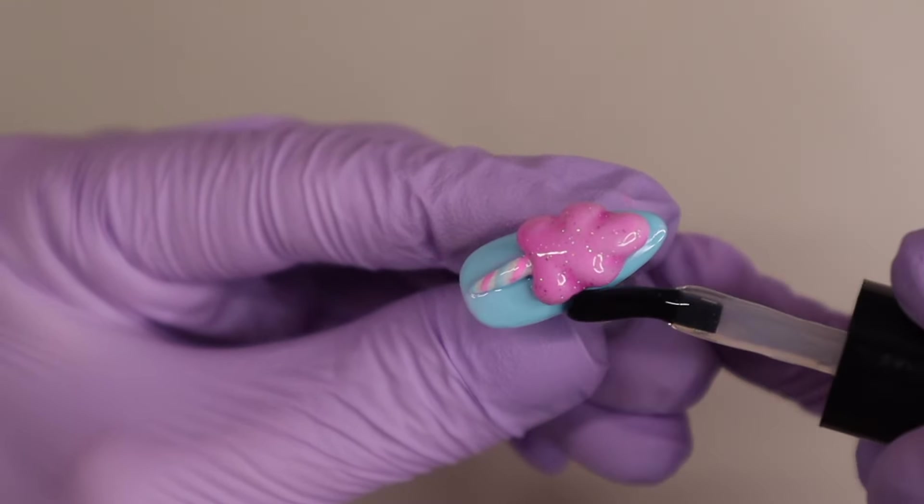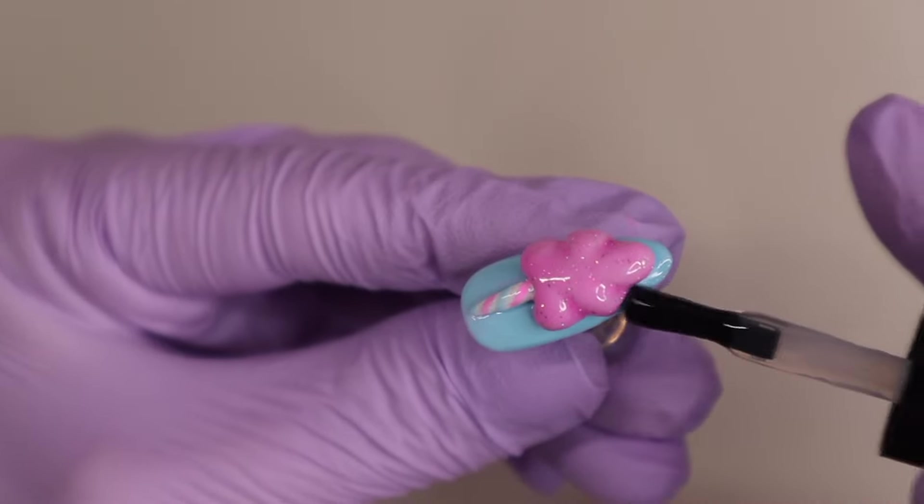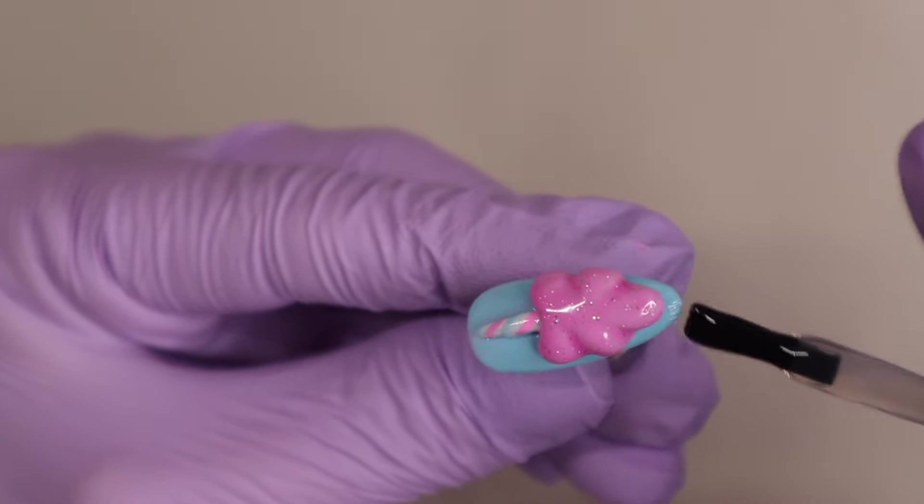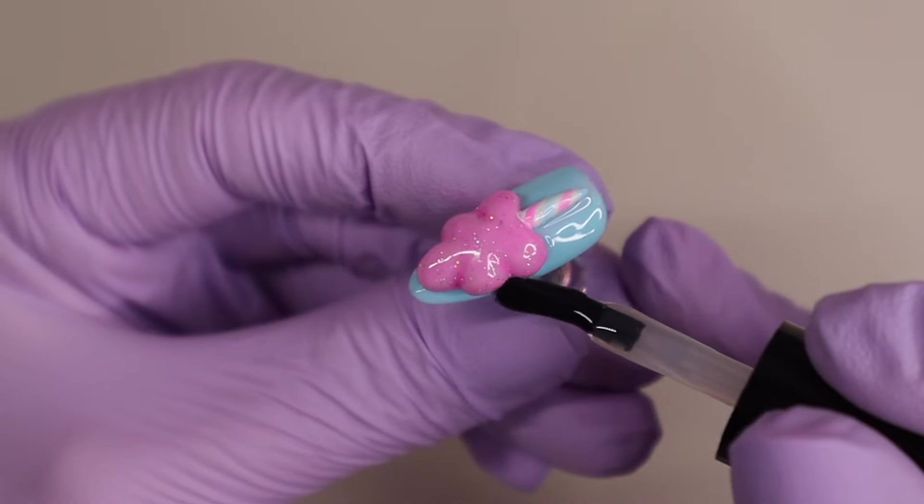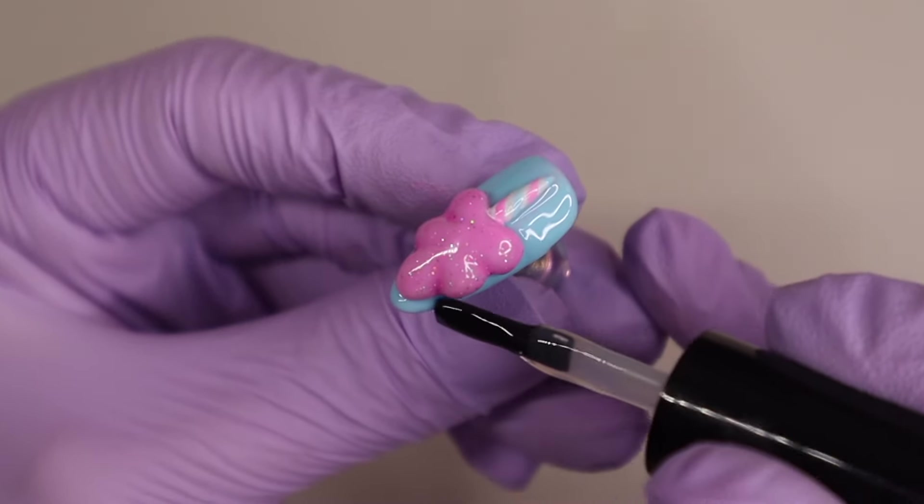Back to that technique I showed you earlier with the chunkier star sequins, I'm putting some more of those on this nail here. I'm doing that same technique with the builder gel and just putting it around the entire cotton candy piece to make sure everything is smooth and even.